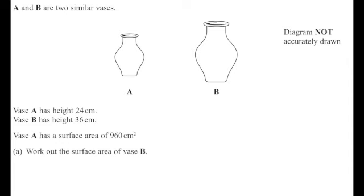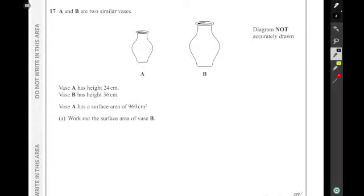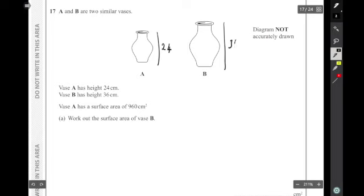Okay, here we have a scale factor question, and we're going to have to work out that scale factor to start with. So they told us the first one is 24, vase A is 24 centimeters, and the larger one is 36 centimeters. So if I do 36 divided by 24, I should find that linear scale factor.